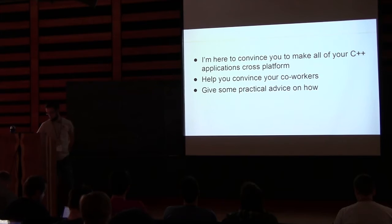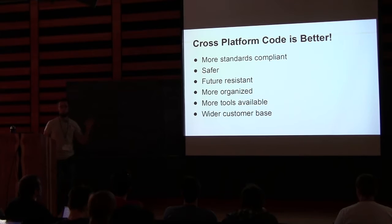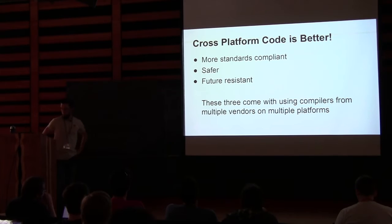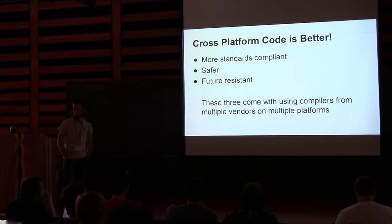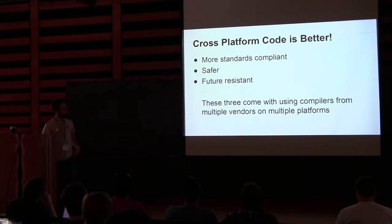I'll give you some advice to help convince your coworkers and some advice on how to actually get the code cross-platform. Cross-platform code is better — it's more standards compliant, safer, future resistant, more organized, you have more tools available, and a larger customer base. To get to 'better,' you can't get there unless you're using multiple compilers on multiple platforms from multiple vendors. If you use Clang on Windows and MSVC on Windows, you won't get the full advantage — you need GCC on Linux, Clang, whatever. Just multiple compilers, multiple platforms.